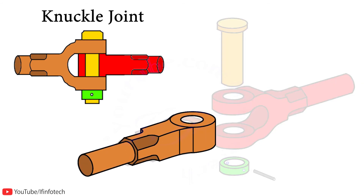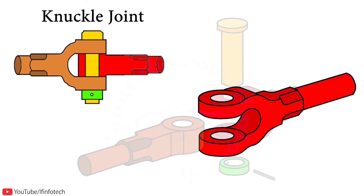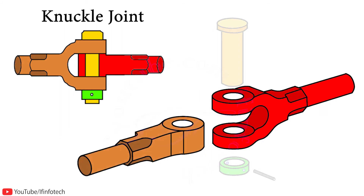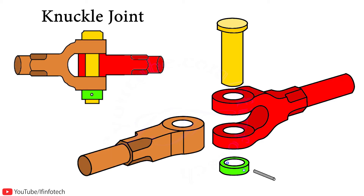The knuckle joint consists of a single eye, which is hollow in shape, and a double eye known as a fork. The single eye is inserted into the double eye, then a knuckle pin is attached. There is also a split pin inserted through the knuckle pin collar, so the whole assembly becomes a lock system.